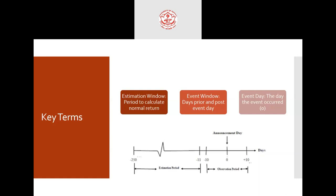There are some key terms to understand before studying practically. The first one is the estimation window — this is the period we use to calculate the normal return. For example, if today is 29th April and Reliance announces a dividend, then today is the event day. The event day is denoted by the number zero, so zero is the announcement day.